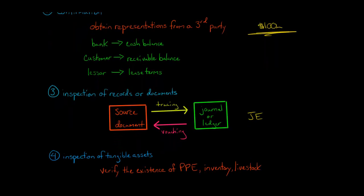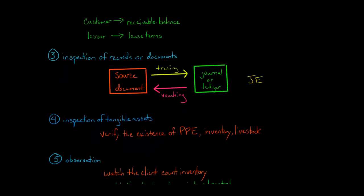You can also inspect tangible assets, for example property, plant, and equipment. If the company says they spent a lot of money on a new machine, you can go and say you'd like to see that machine. You can watch the client count inventory. You can actually look and see if they have the inventory they claim they have. For example, if we're talking about a farm, you could count the amount of livestock that they have.